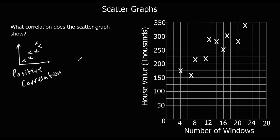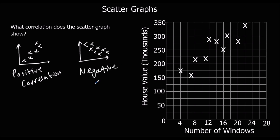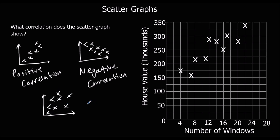If it was going down — so if as the number of windows increased the house value decreased — and it followed a downwards line, that would be called a negative correlation. And if the points were all over the place and there wasn't a real pattern, that would be no correlation. So we need to be able to look at scatter graphs and identify the relationship.